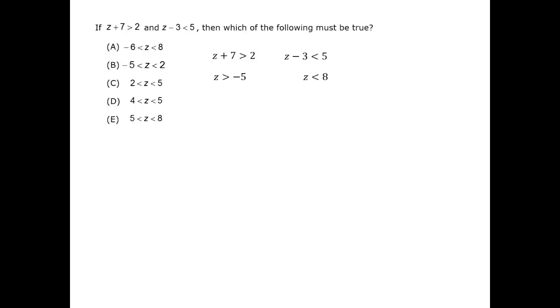Now we can combine them: minus 5 is less than z is less than 8. That's not in the answer choices. Have we made a mistake?